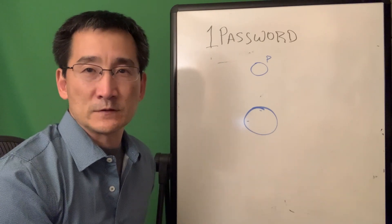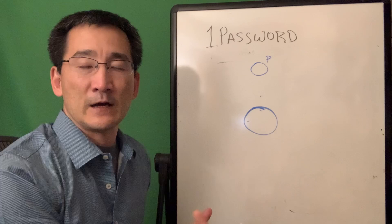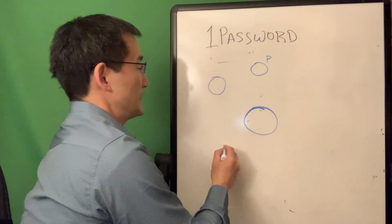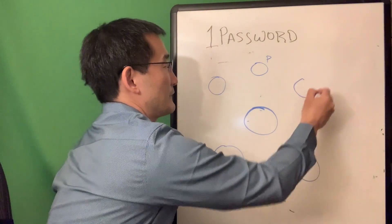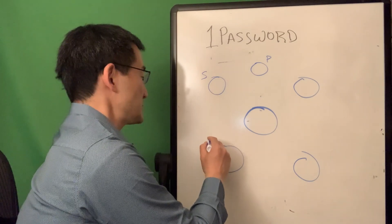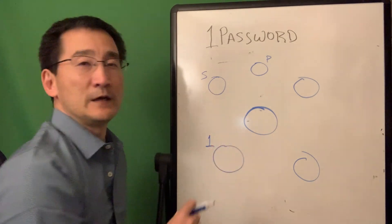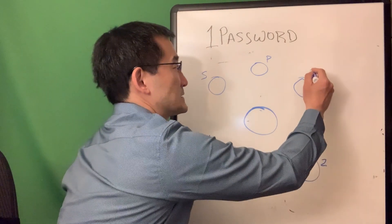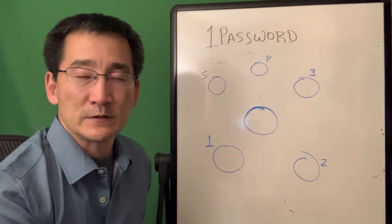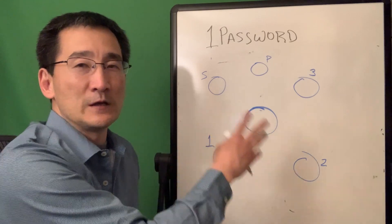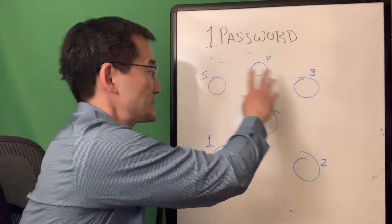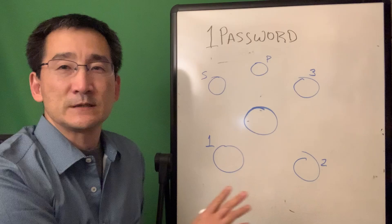Those four other people could be part of your family or other individuals that you know. So you could be the primary, and then say it's a family with five folks total — you have your spouse, and then one, two, three children, or three other accounts. It could be your brother, sister, friend, however. I'm going to explain to you the structure here. Each person in this system gets a private vault and nobody else can see that private vault.